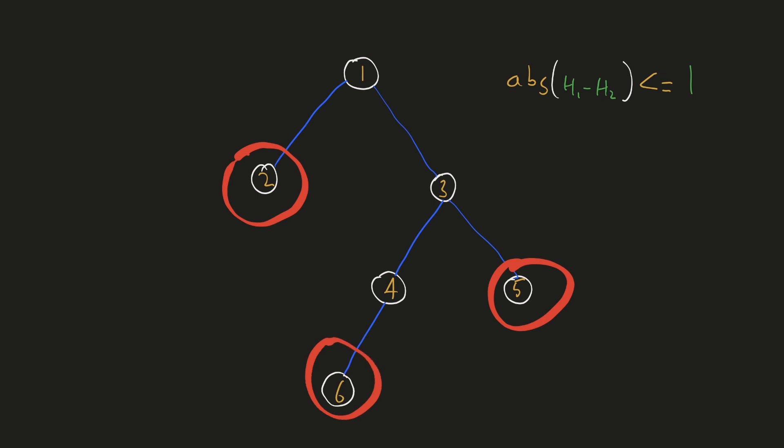Whether a node is balanced or not depends upon the results of its child subtrees. We have to do a depth first search traversal for this. For every node we have to check 3 things: the left and the right subtree should be balanced, and the difference of the heights of the left and the right subtree should be at most 1.